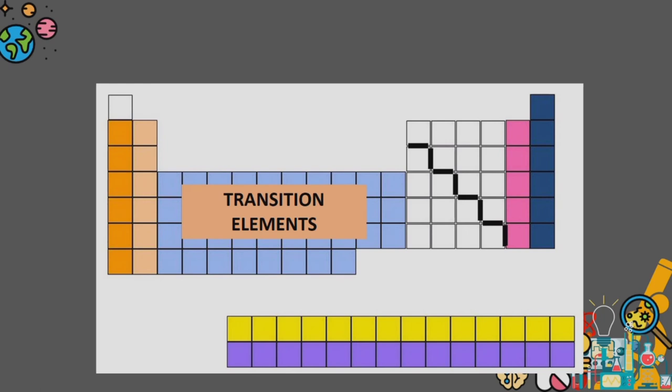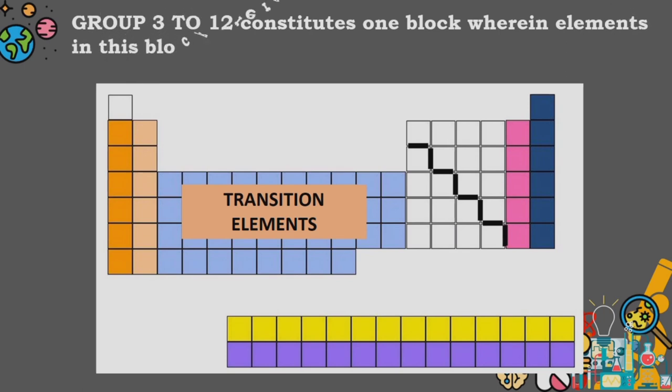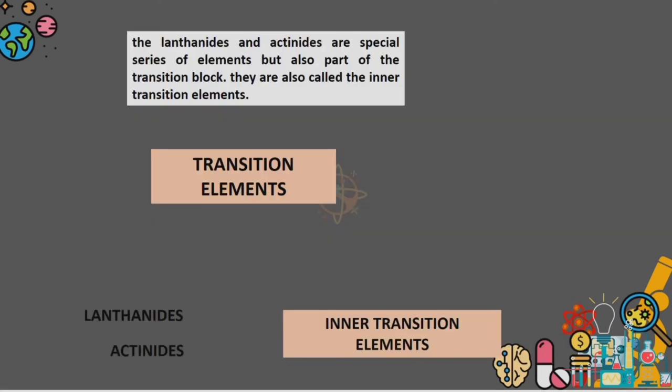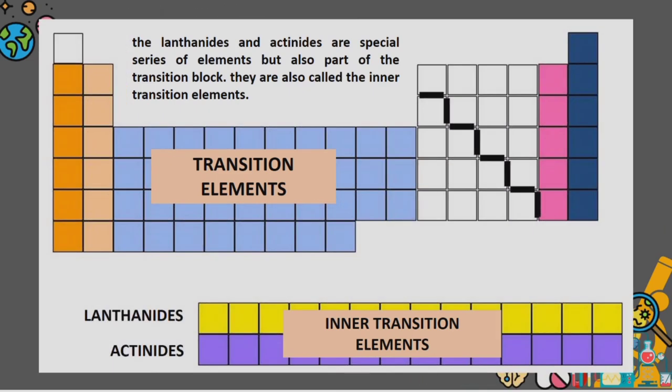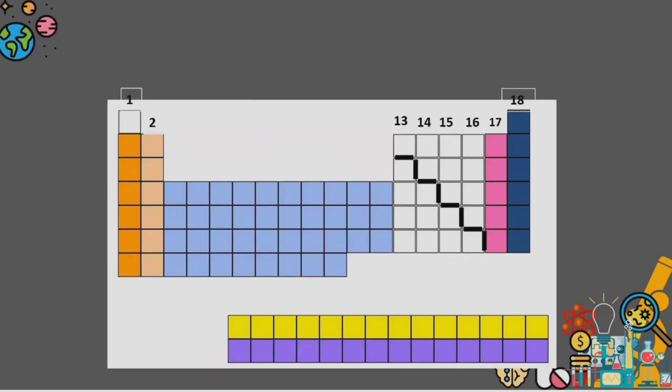The elements are grouped into blocks or series in the periodic table. Groups 3 to 12 constitute one block. Elements in this block are referred to as the transition elements. Lanthanides and actinides are a special series of elements, but also part of the transition block. They are also called the inner transition elements.